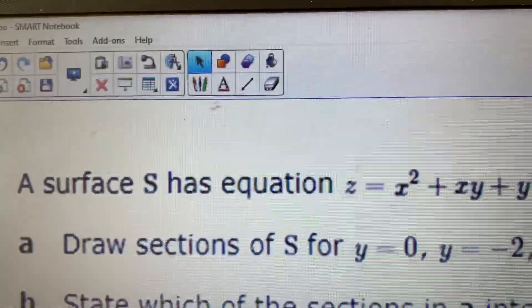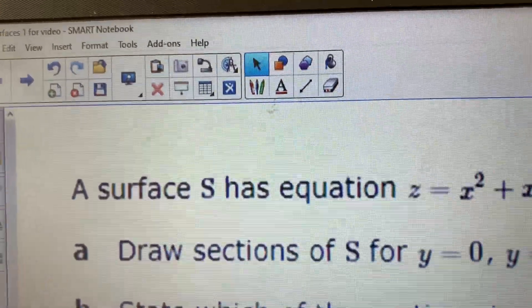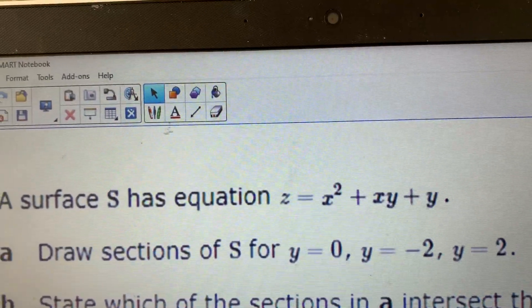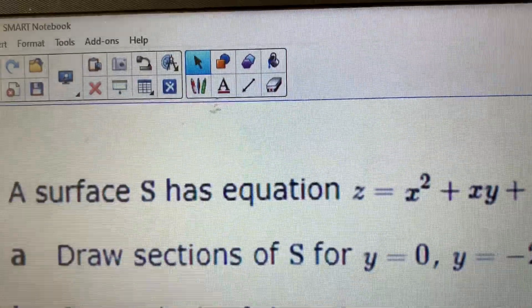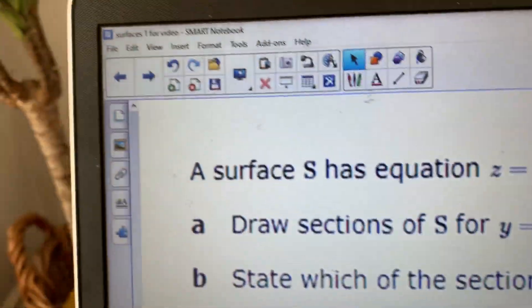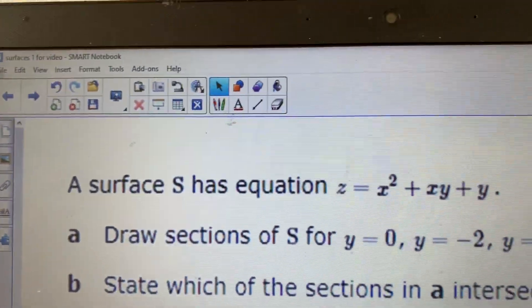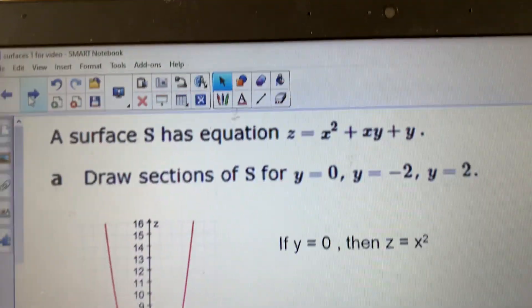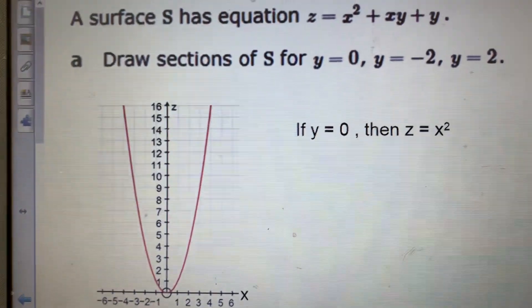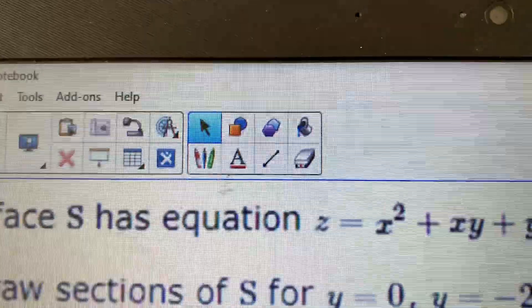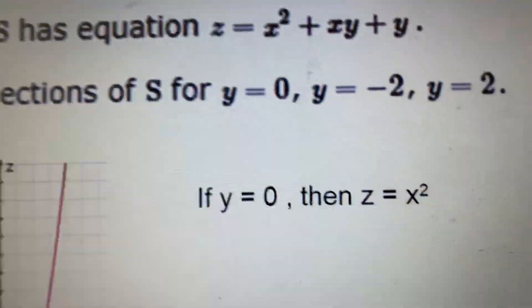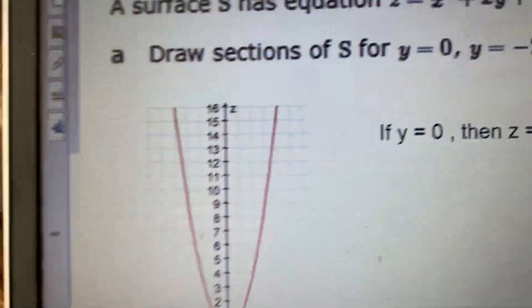What it asks you to do in part A is draw three separate sections. Now, the first one is going to be for when Y is 0. So what that looks like is this. So you basically, if you let Y equal 0, then you're simply going to end up with Z is X squared plus 0, so you end up with Z is X squared.